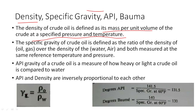Density is mass per unit volume. For specific gravity, it is defined as the ratio of densities. When calculating the specific gravity of oil, the density of oil must be divided by the density of water as the base. So the specific gravity of oil is density of oil divided by density of water.